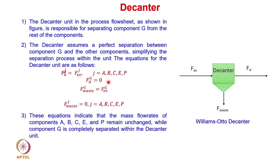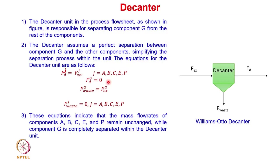From the decanter, Fd_G = 0, meaning the top output has no byproduct G. The waste G is completely separated at the bottom: Fg_waste = Fg_Ex — whatever G entered the decanter is removed as waste. All other components A, B, C, E, P have Fj_waste = 0; none appear in the waste stream at the bottom.